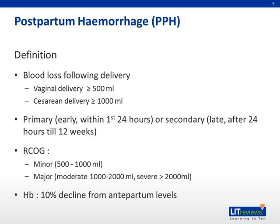ARCOG has a separate guideline or definition of PPH. Minor PPH is defined as blood loss between 500 to 1,000 mL. Major PPH can be further divided into moderate, between 1,000 and 2,000 mL of blood loss, and severe PPH is defined as more than 2,000 mL of blood loss. A separate definition of PPH can also use hemoglobin levels, when there's a 10% decline from the antepartum levels.